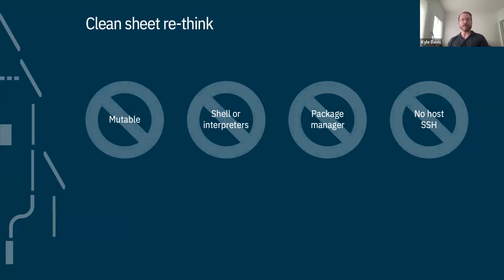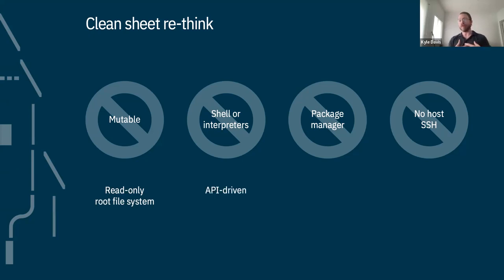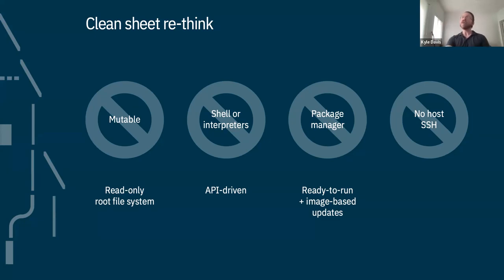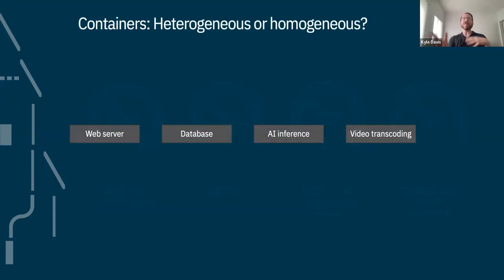There are a lot of problems with typical Linux interactions in the cloud, but they're all solvable — and that's where most container-optimized Linux distributions have made different choices. With immutability, you can have a read-only root filesystem. If you simplify the OS as much as possible, you don't need shells or interpreters; instead you replace them with an API that has a consistent interface. You don't need a package manager if the instance is ready to run from the start, updating via whole images instead of individual packages.